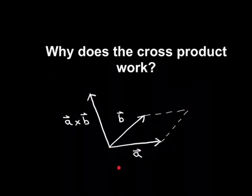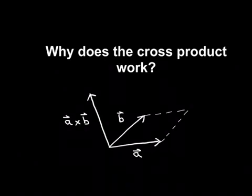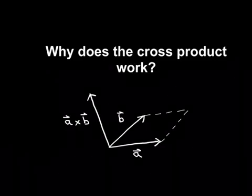So the answer will be that other vector of size equal to the area of this parallelogram, perpendicular to both A and B, but pointing in exactly the opposite direction. So in this case, the cross product is not commutative, unlike the dot product. So A cross B is actually equal to minus B cross A.